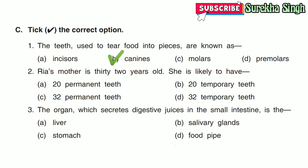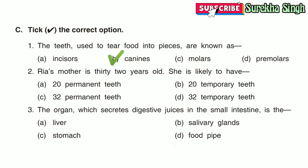2. Riya's mother is 32 years old. She is likely to have: Option A — 20 Permanent Teeth, Option B — 20 Temporary Teeth, Option C — 32 Permanent Teeth, Option D — 32 Temporary Teeth. Here Option C is correct: 32 Permanent Teeth.